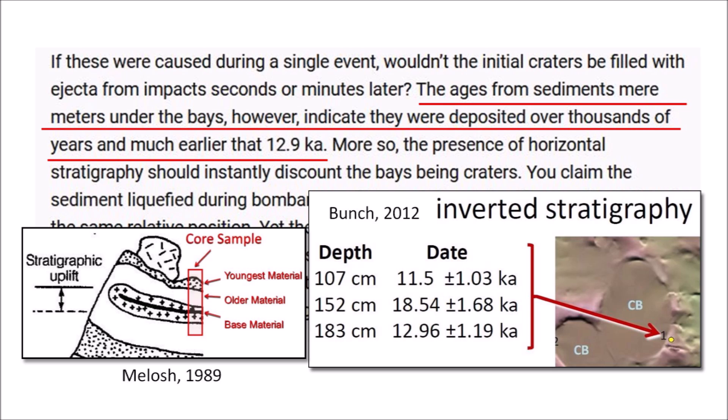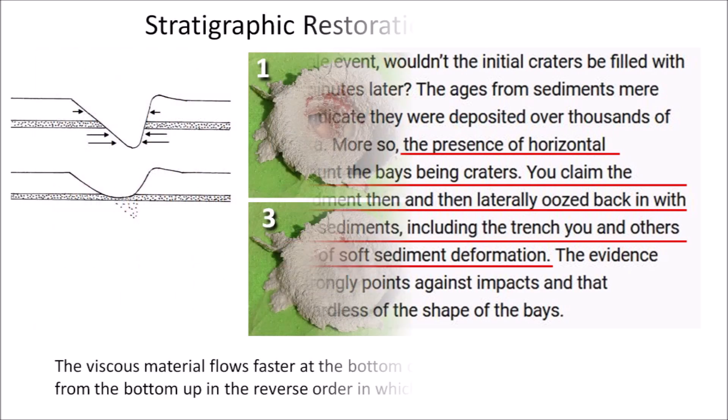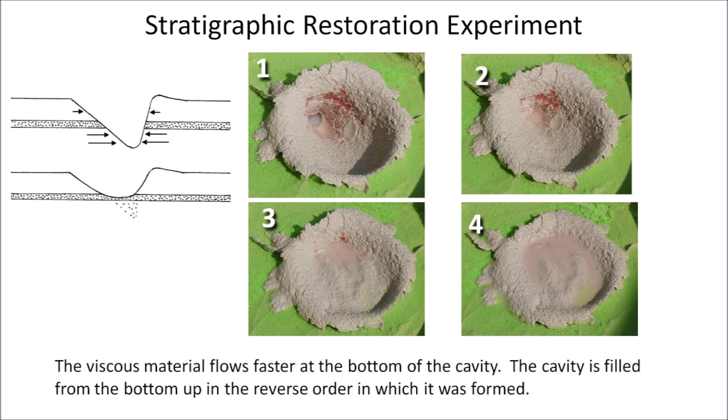The impacts that made the Carolina Bays scrambled the stratigraphy. You cannot expect the terrain to maintain a consistent progressive stratigraphy after those impacts. A paper published by Ted Bunch in 2012 found inverted stratigraphy in the rim of a Carolina bay, which is characteristic of impact cratering. The presence of horizontal stratigraphy should instantly discount the bays being craters. You claim the sediment liquefied during bombardment and then laterally oozed back in with the same relative position, yet the sediments lack the distinctive indicators of soft sediment deformation.